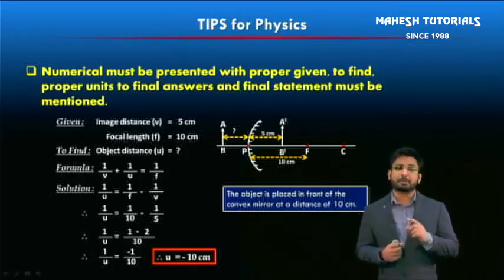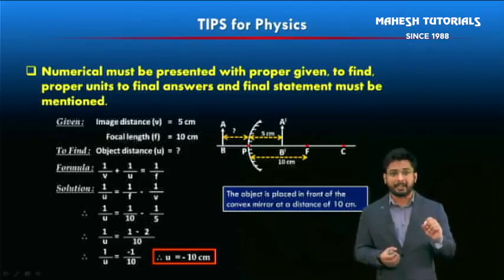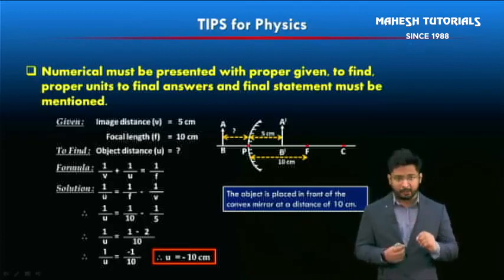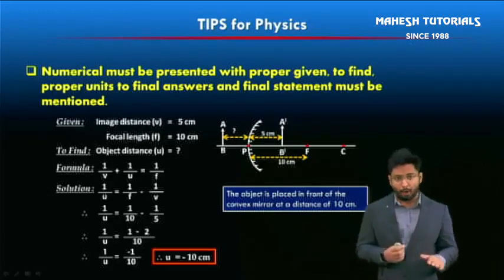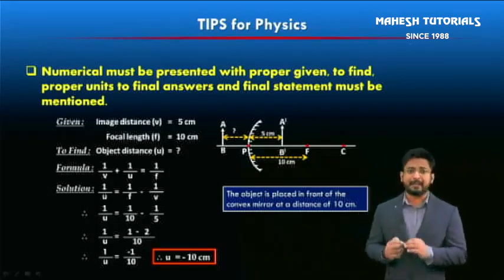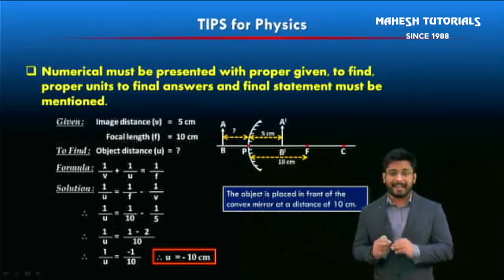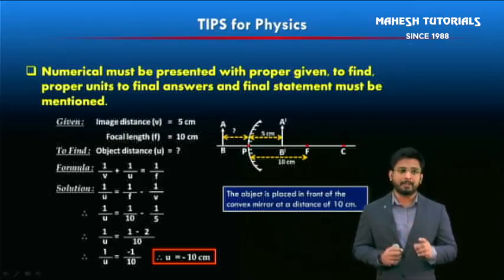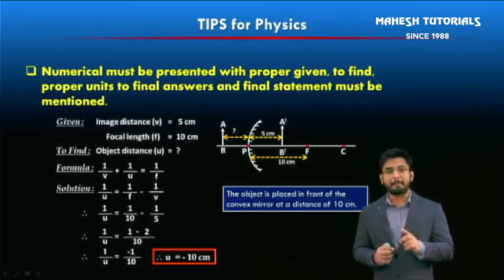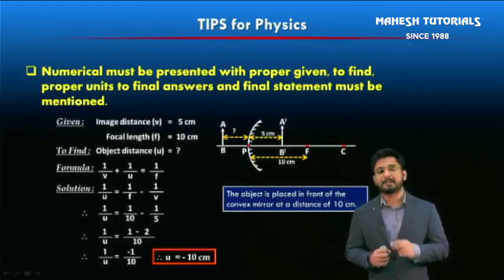For questions related to the chapter on light — numericals on mirrors or lenses — when writing the given section, make sure proper signs are assigned to each value. After writing the values, immediately check those signs, because a mistake there makes the entire solution wrong. Do not jump or skip steps; proper steps should be there with a final statement at the end. Units generally carry half a mark, so proper units should appear in each answer. Note that magnification and refractive index have no units.